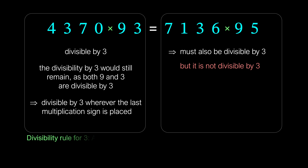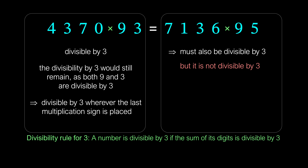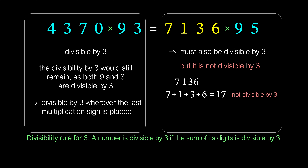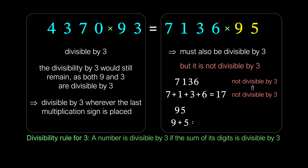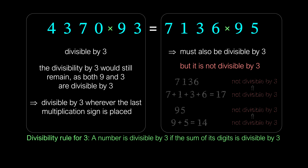This follows from the divisibility rules: a number is divisible by 3 if the sum of its digits is divisible by 3. The sum of the digits of the number 7136 equals 17; 17 is not divisible by 3, which means 7136 is not divisible by 3. The sum of the digits of the number 95 equals 14; 14 is not divisible by 3, which means 95 is not divisible by 3 either. Therefore, the number on the right is not divisible by 3.